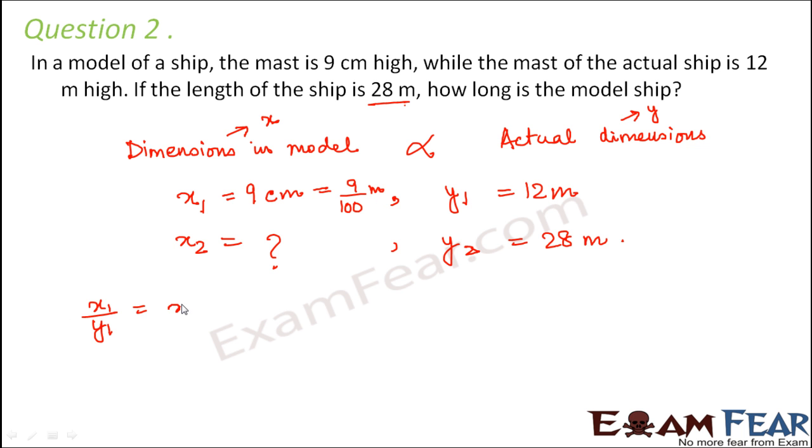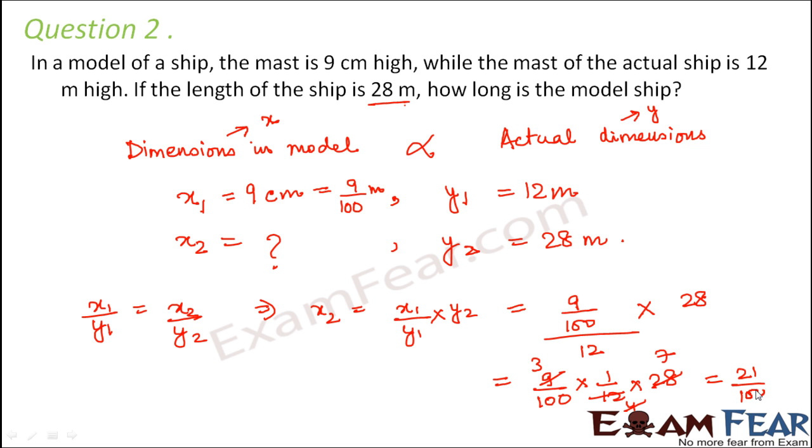Therefore, we can write x2 is equal to x1 by y1 into y2. So let's put the values. x1 is 9 by 100 divided by y1 which is 12 into 28. This is equal to 9 by 100 into 1 by 12 into 28. So this is 21 by 100 meters. This is nothing but 21 centimeters. Therefore, the length of the model ship would be 21 centimeters.